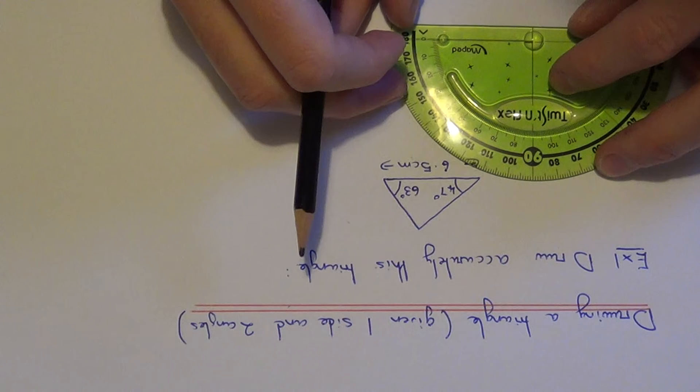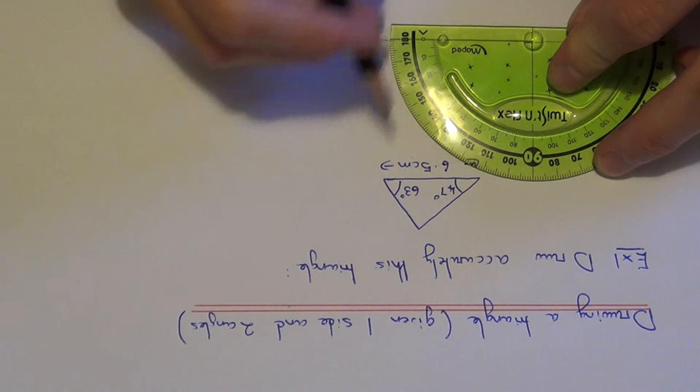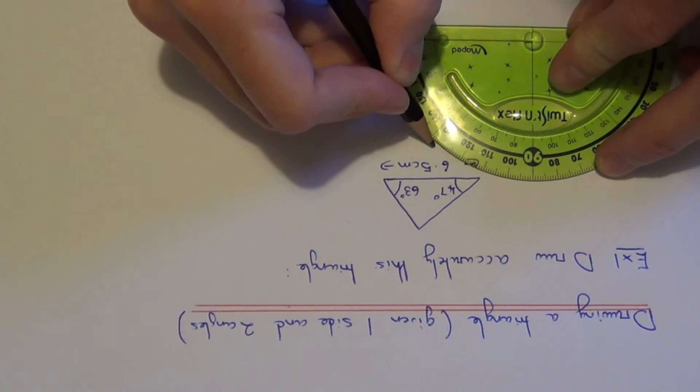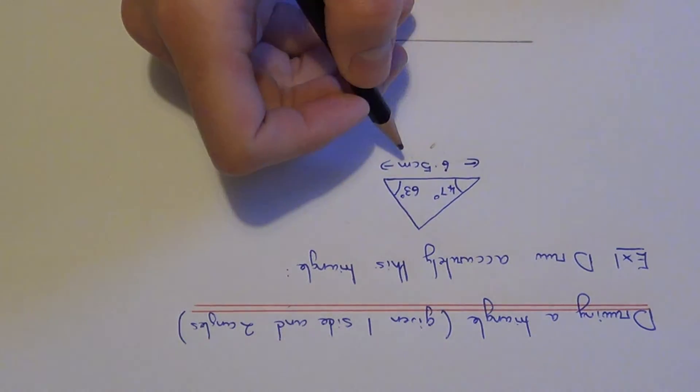That is on the left-hand side of the line. So 10, 20, 30, 40, 47. I've put a little dot there.